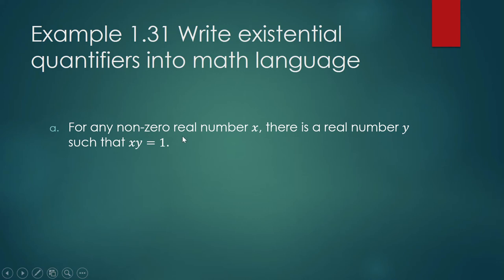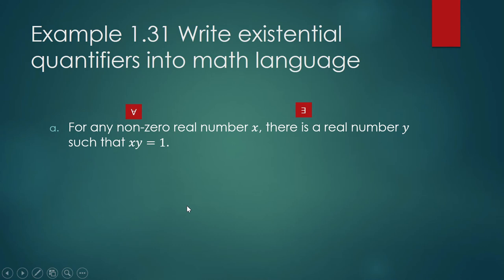Example A: 'For any non-zero real number x, there is a real number y such that x times y is equal to 1.' 'For any' is a universal quantifier, so we will use that symbol here. 'There is a real number y' — we will use the existential quantifier symbol there. Let us put that together using common math symbols for set membership.